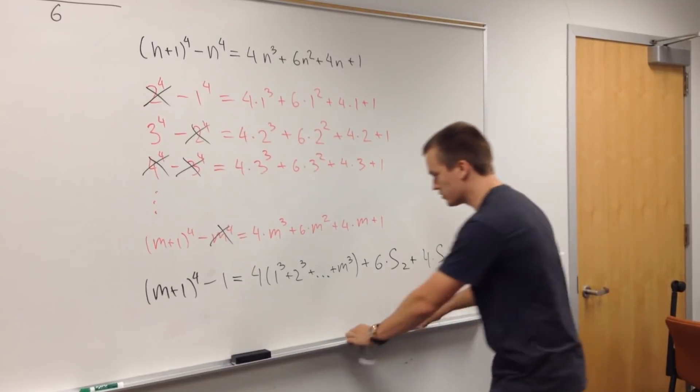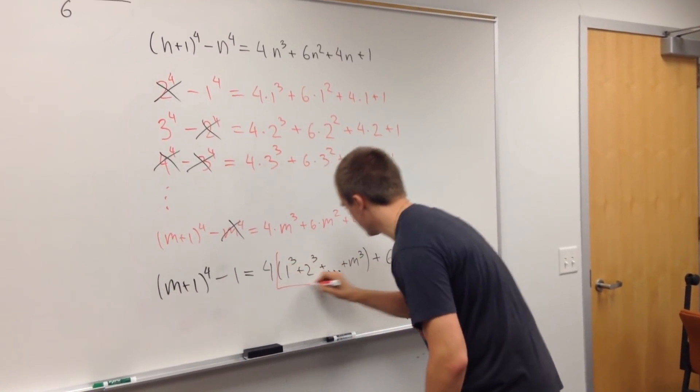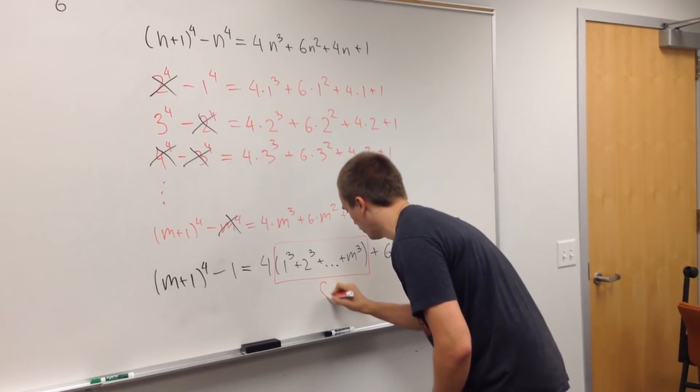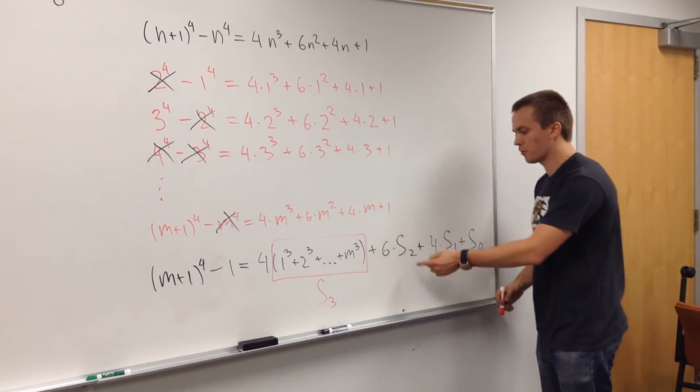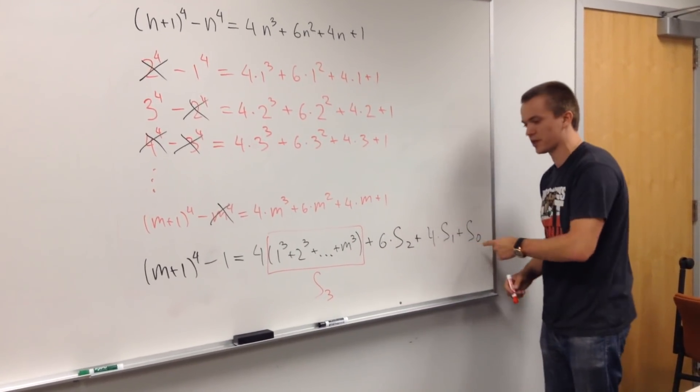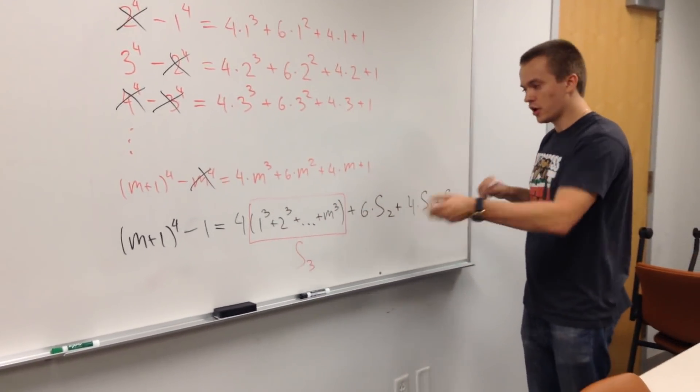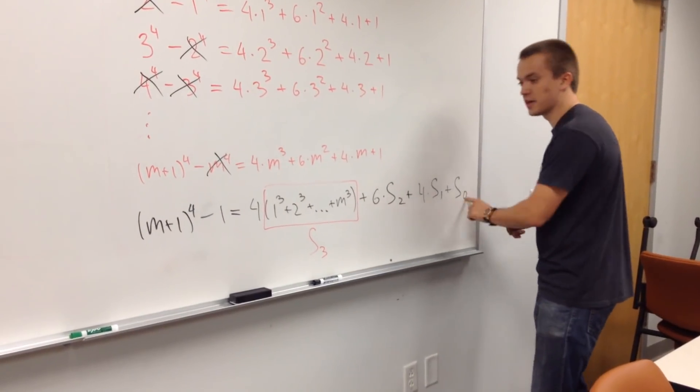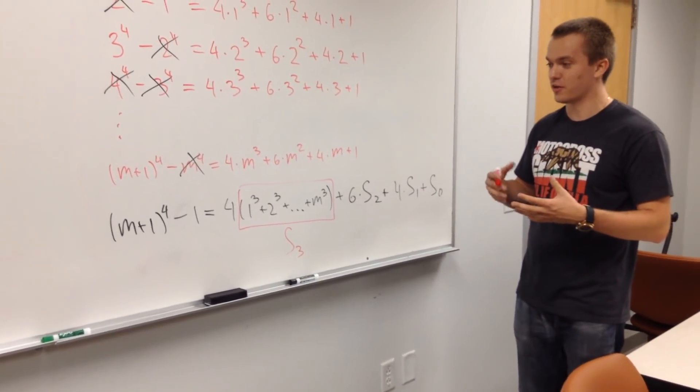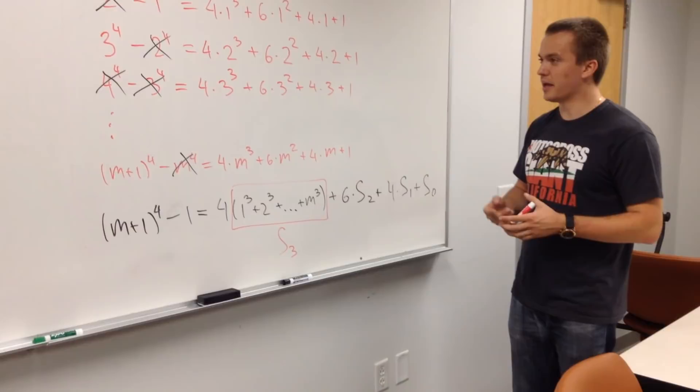So in this case, you can see, you have this as our unknown s3. And you know the formula for s2, for s1, for s0. So by having this equation, you can express s3 in terms of these sums. So in some sense, you got recursion formula.